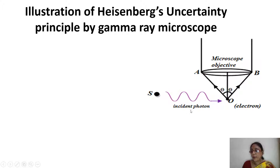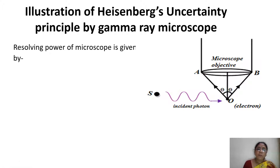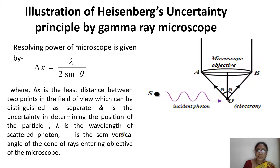If p is the initial momentum of the incident photon, then the momentum along OB and OA for the scattered photon will be different. The photon which gets scattered is captured within the microscope objective — it gets scattered through an angle theta, which is the semi-vertical angle. The resolving power of a microscope is given by delta x equals lambda by 2 sin theta, where delta x is the minimum distance between two points that can be distinguished as separate by the microscope, representing the uncertainty in determining the position of the particle. Here lambda is the wavelength of the scattered photon and theta is the semi-vertical angle of the cone of rays entering the objective.